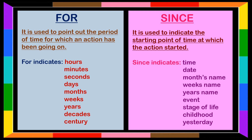The usage of 'for' and 'since': 'For' is used to point out a period of time during which an action has been going on, used with words such as hours, minutes, seconds, and days. 'Since' indicates the starting point of time at which an action started, and is used with specific times, dates, and month names, making it easy to identify the starting point.